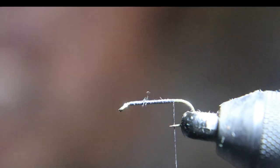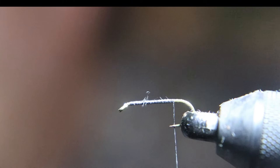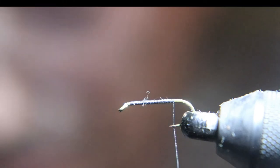Now we're going to use some of this Hungarian partridge for a tail. You can also use the brown tips of the pheasant tail fibers as a tail, it's up to you. I prefer Hungarian partridge.